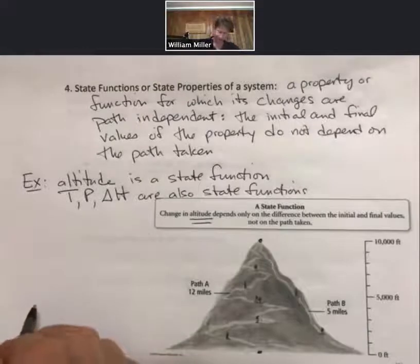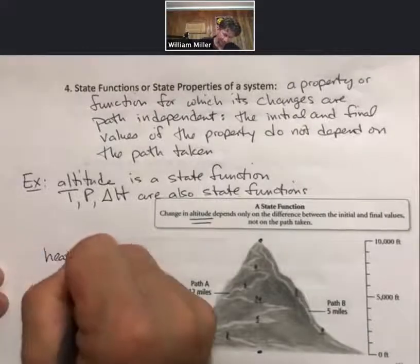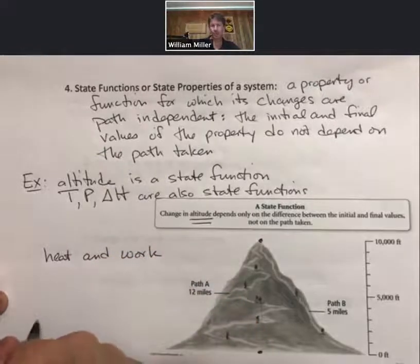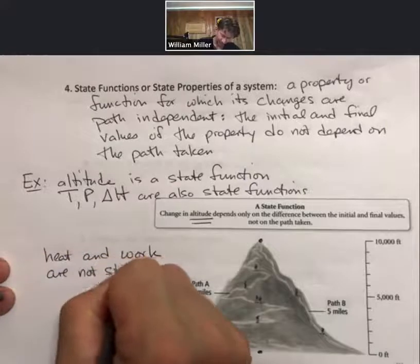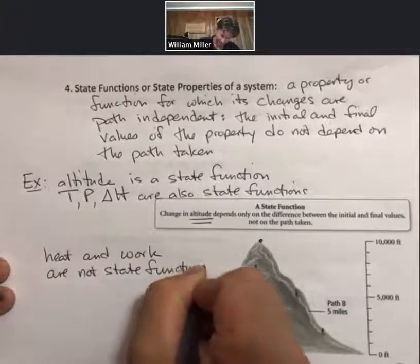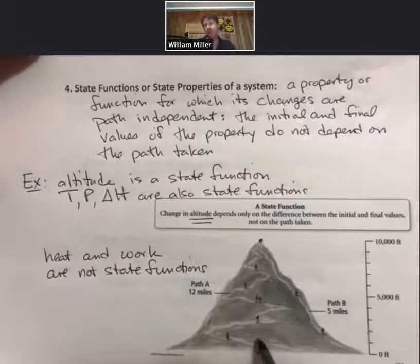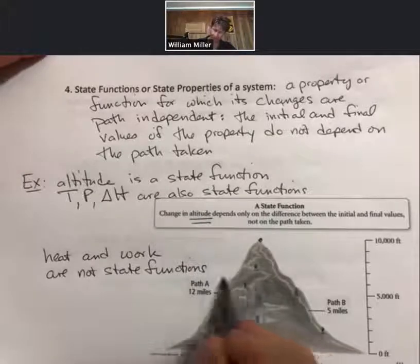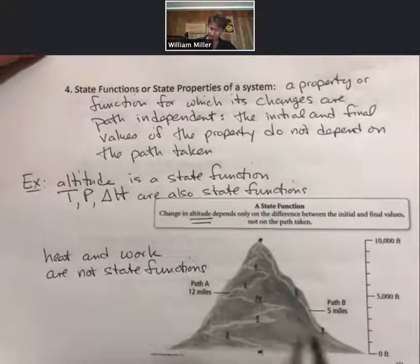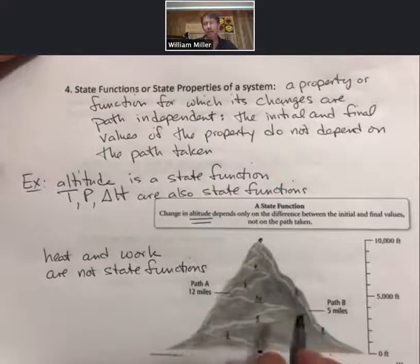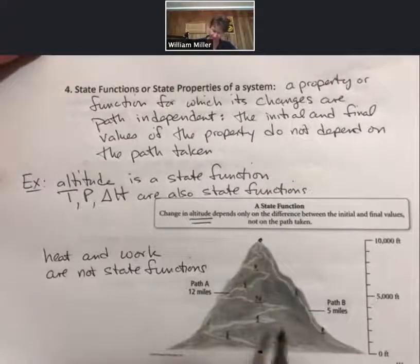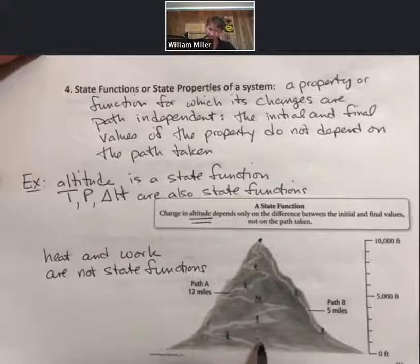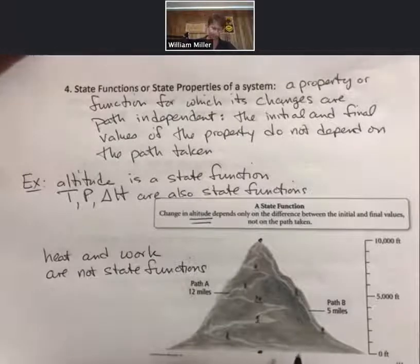Counter-examples: heat and work are not state functions. For example, going back to the mountain analogy, you could exert a lot of work going back and forth as you climb, or you could go straight up and do less work moving your body — yet you'd have the same change in altitude. Altitude is a state function, but work is not. Work depends on the path.